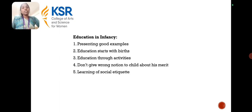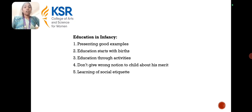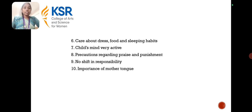The next factor is education in infancy — how education plays an important role in infancy. Instead of learning using books, presenting good examples is important, and education starts through activities. Care should be taken not to give the wrong notion to the child about merit and learning of social conduct, and care about dress, food, and sleeping habits. The child's mind is very active, so precautions regarding praise and punishments are needed, along with the importance of the mother tongue.